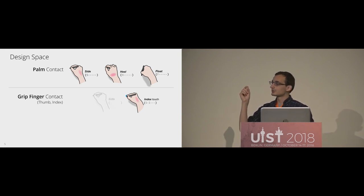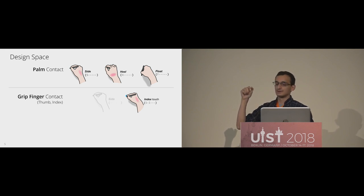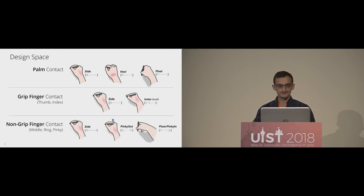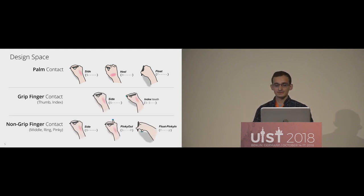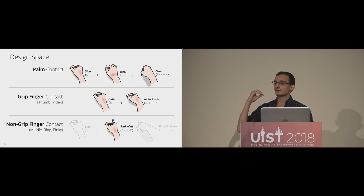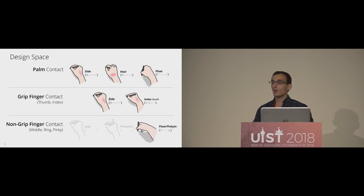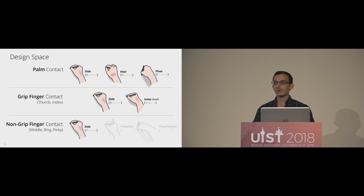For the grip fingers, you could either push your index finger or thumb down to the screen to touch it, or they could be not touching the screen at all. The last three fingers, our non-grip fingers, had three possible states, being less important: they could either be touching the screen above or out from the pen tip, touching the screen below or in from the pen tip, or of course not touching the screen at all.